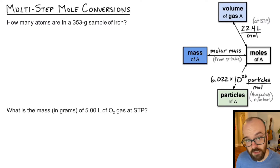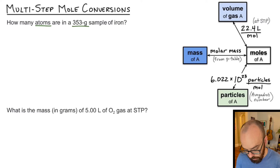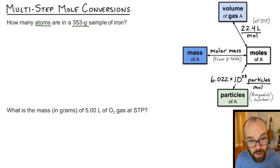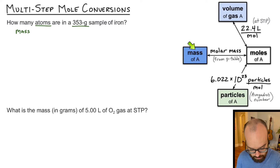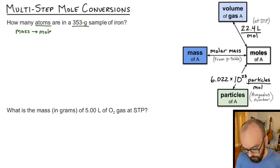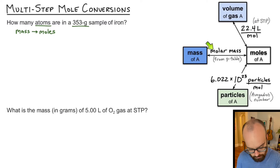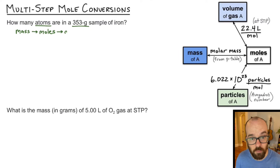Now that we've got those conversion factors listed out, let's look at some problems. This first problem says: how many atoms are in a 353-gram sample of iron? Grams is the mass, so I know the mass and I'm trying to get from mass to atoms, which are a type of particle. Let's map out our conversion. We're starting with mass — on the stoichiometry map I see 'mass of A,' and the only thing I can convert to from mass is moles. But I'm trying to get to atoms, so: mass → moles → particles.